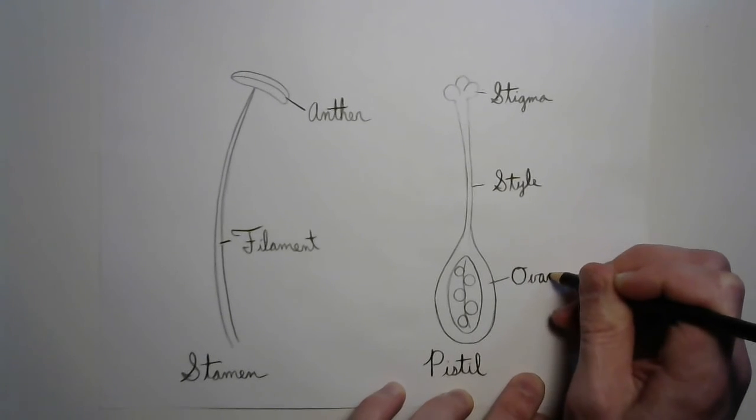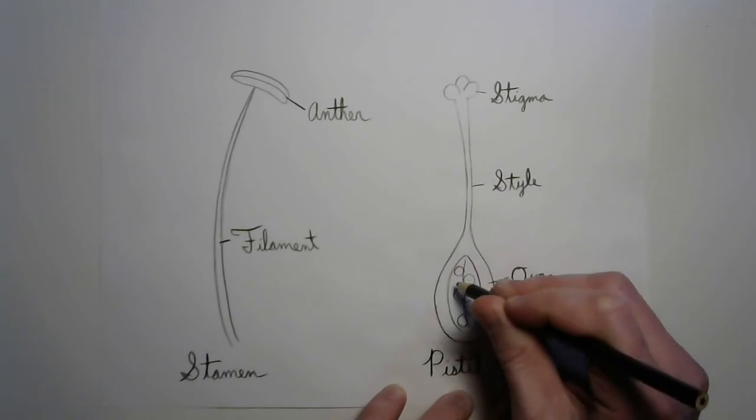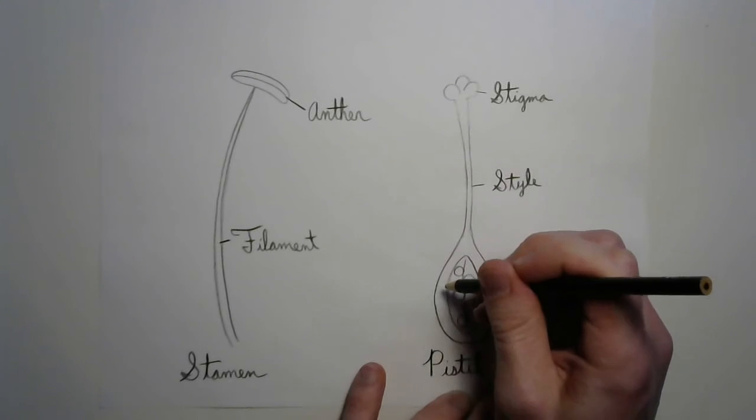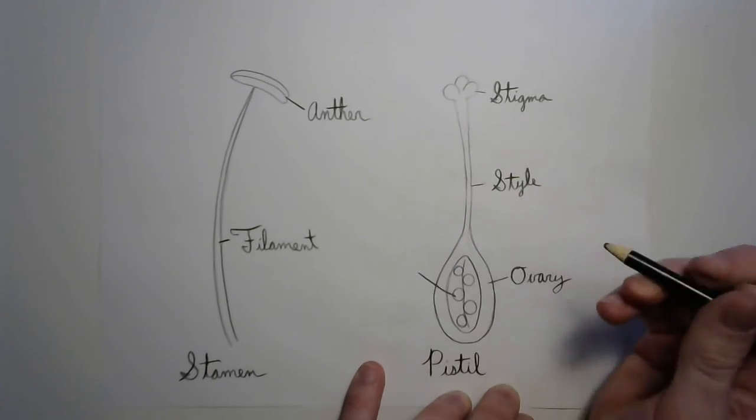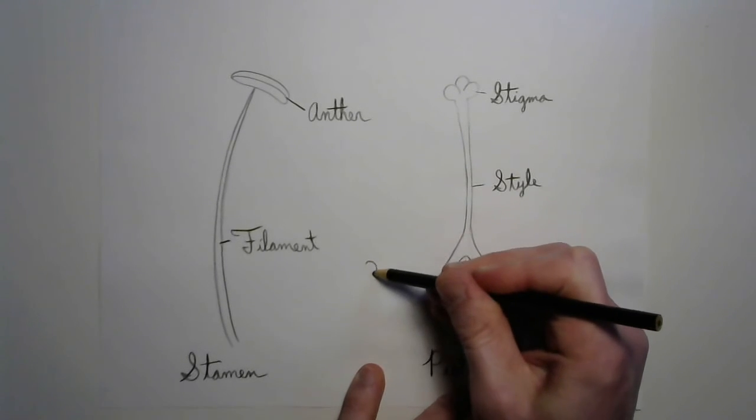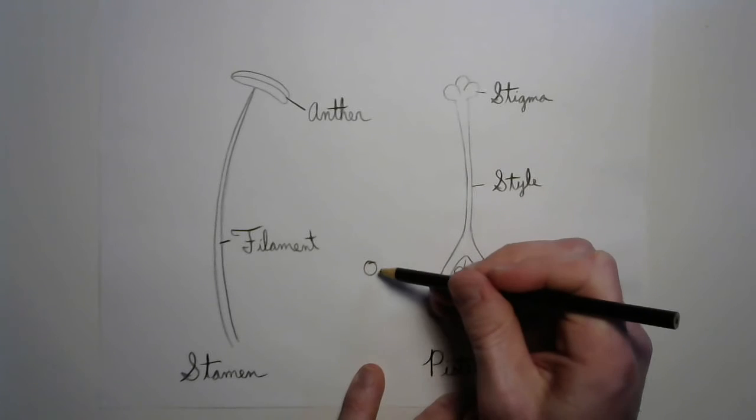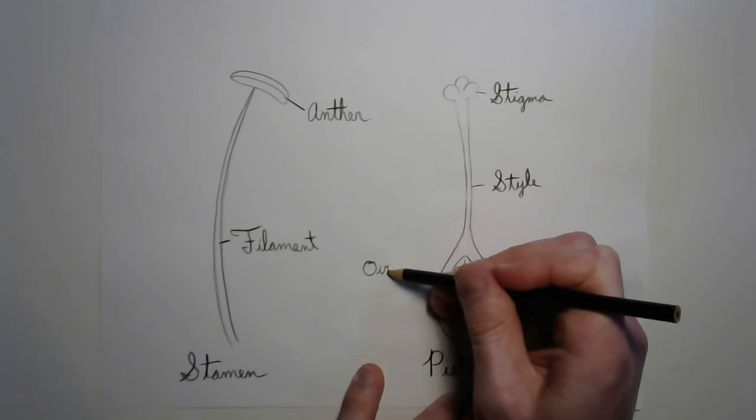And inside the ovary, you can see these little things. Each one of these is called an ovule, and ovule comes from the same word as ovary. It means egg.